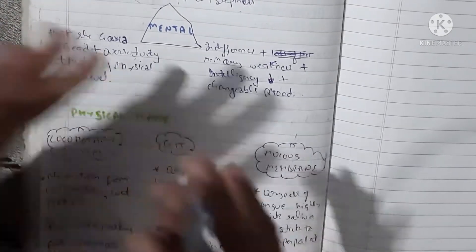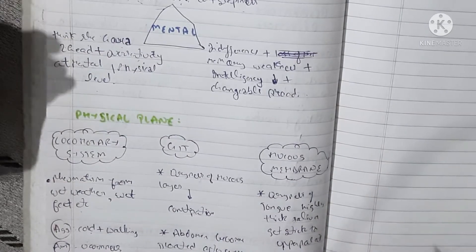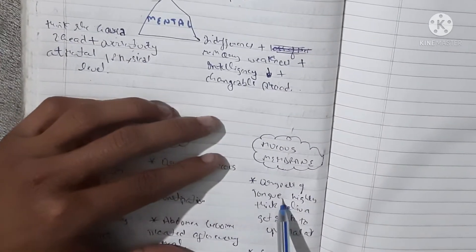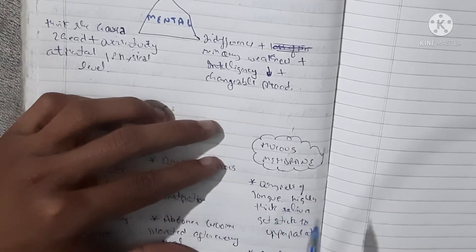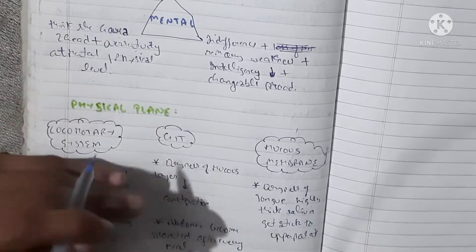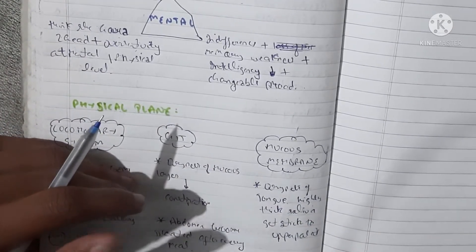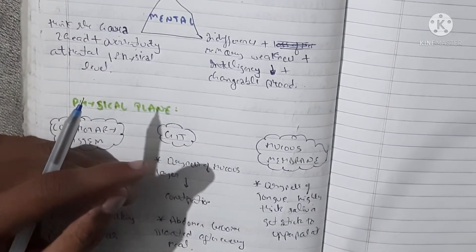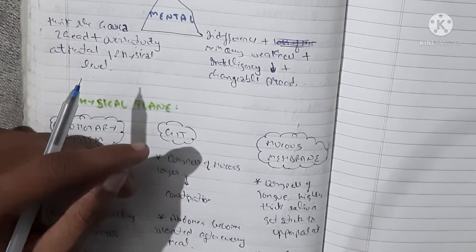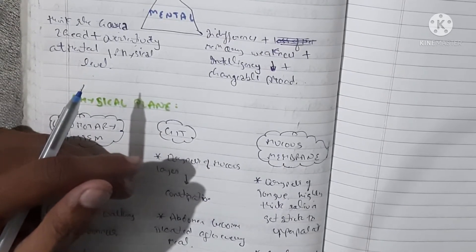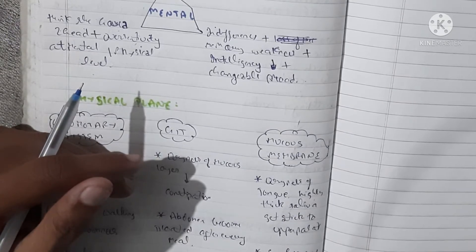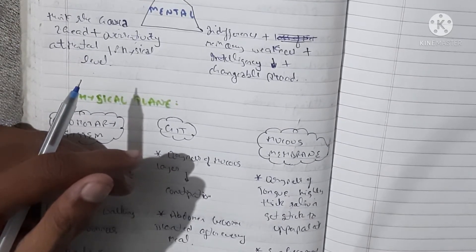And lastly, in the mucous membranes, there is dryness as I mentioned earlier. Dryness at an extreme level so that the saliva becomes highly thick. If you are running out of work or go out and get dehydrated, sometimes you experience that our saliva is thick and white.